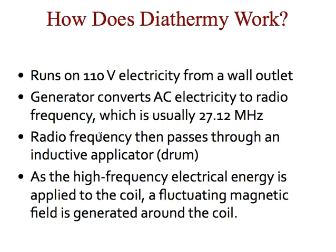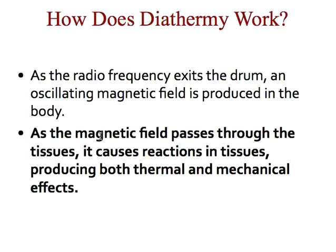How does it work? Pulsed shortwave diathermy runs on 110-volt electricity from the wall outlet. The generator converts that AC electricity into radio frequency — in the case of pulsed shortwave diathermy, that's 27.12 megahertz. The radio frequency then passes through the inductive drum or applicator. As the electrical energy is applied to the coil, a fluctuating magnetic field is generated around the coil. As the radio frequency exits the drum, an oscillating magnetic field is produced in the body. As this magnetic field passes through tissues, it causes reactions producing both a thermal and mechanical effect.